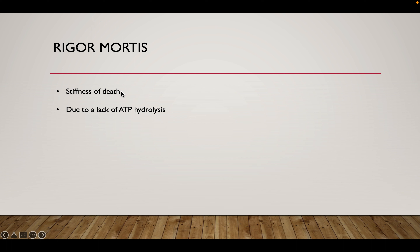Rigor mortis can show up in as little as 12 to 24 hours, possibly even sooner. It obviously doesn't stay forever — as time goes on, the myofilaments and the different proteins begin to break down, which prevents the contraction from being sustained. You can observe it if you ever see an animal that has died and passed it at the right time — you may notice its legs are sticking perfectly up or out to the side, very rigid. That animal is in a current state of rigor mortis occurring post-mortem.